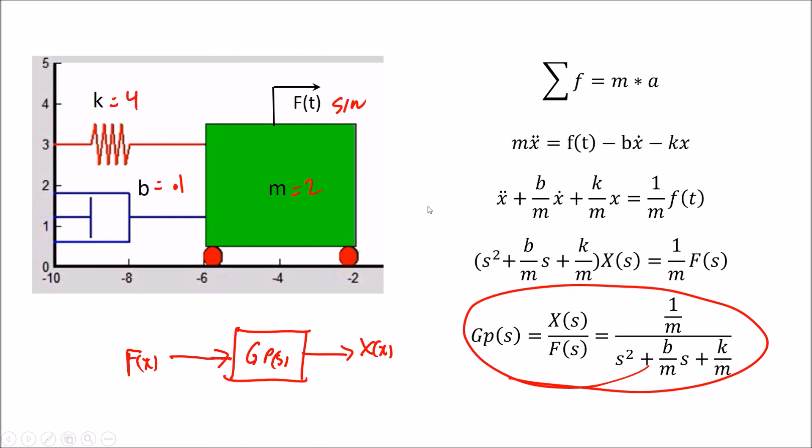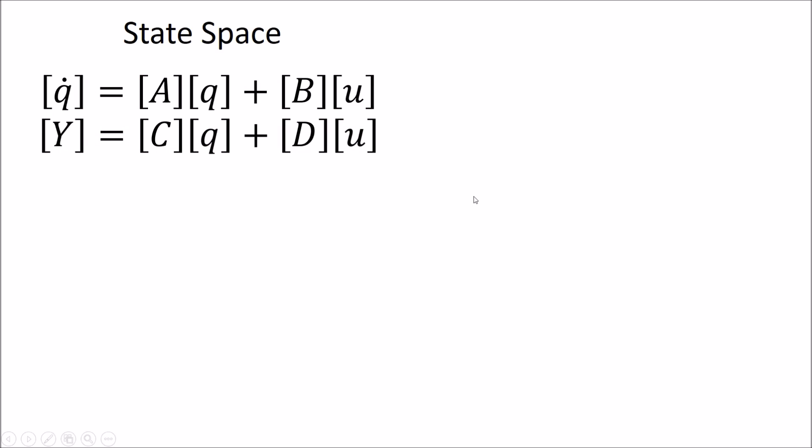I promised you the state space representation. So what is state space? Well, it's a method where we describe our system, our linear time invariant system typically, as a set of first order differential equations in matrix form. And this is the standard form here. Okay. Where we have a set of states q, we have an input u, we have the derivative of the states, let's call it states dot, less writing. We have some output, and we have these matrices A, B, C, D, which contain the coefficients of our first order differential equations.